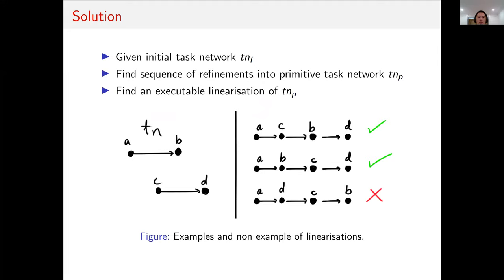Now a solution for an HTN planning problem with an initial task network, TNI, is a sequence of refinements into a primitive task network, TNP, where TNP has an executable linearization. So a high-level description is that we can execute all tasks which can preserve the task order defined in the initial task network.